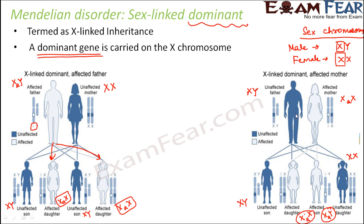To summarize: in sex-linked dominant inheritance, the gender of the affected parent determines which children are affected. If only the father is affected and the mother is not, only the daughters will get affected — fathers can pass X-linked traits only to daughters. If the father is not affected but the mother is affected, the mother can pass it to both sons and daughters, with a 50% probability for each child.